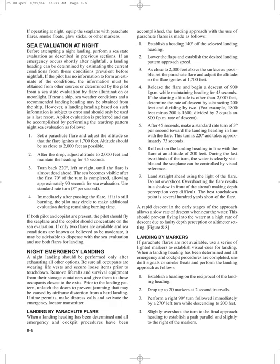A pilot sea evaluation can be accomplished using the teardrop pattern as follows. Set a parachute flare adjusted to ignite at 1,700 feet, with altitude as close to 2,000 feet as possible. After the drop, adjust altitude to 2,000 feet and maintain heading for 45 seconds. Turn back 220 degrees, left or right, until the flare is almost dead ahead. The sea becomes visible after the first 70 degrees of the turn, allowing approximately 90 seconds for sea evaluation using a standard rate turn of 3 degrees per second. Immediately after passing the flare, if still burning, the pilot may circle for additional evaluation. If both pilot and co-pilot are present, the pilot should fly the seaplane while the co-pilot concentrates on sea evaluation. If only two flares are available and conditions are believed to be moderate, it may be advisable to dispense with sea evaluation and use both flares for landing.